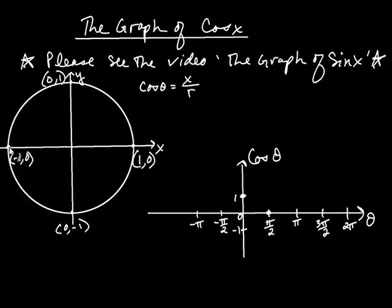And going to pi, the x coordinate is negative 1 and r is 1. So negative 1 divided by 1 is negative 1. So we're right here. And then going on to 3 pi over 2, so all the way over here. The x coordinate is 0, r is 1. So we get 0 divided by 1, which is 0 again.